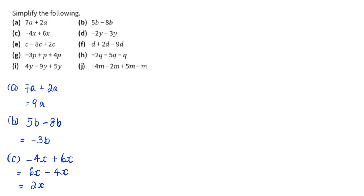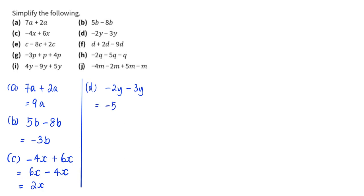Next, part d: negative 2y minus 3y. There are negative 2y and negative 3y, so therefore we would have negative 5y in total.